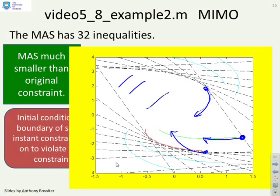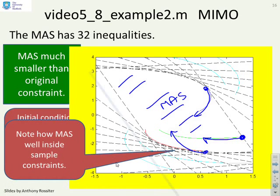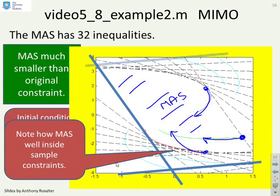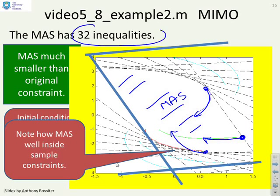And so this region here is my MAS. Now if you wanted to look where the original constraints were, you'll notice there is the original constraints. And what do you notice? The MAS is much smaller than the original constraints. So if I want to guarantee that I satisfy constraints for all future samples, then my initial condition has to be inside a much smaller set. And in this particular case, you'll see we've put it here, the MAS has 32 inequalities.